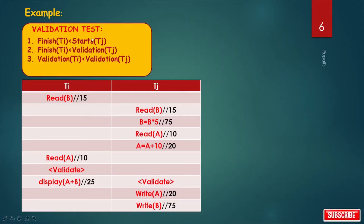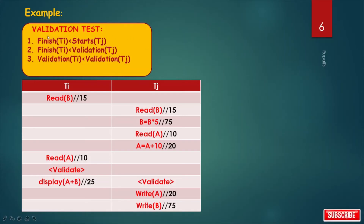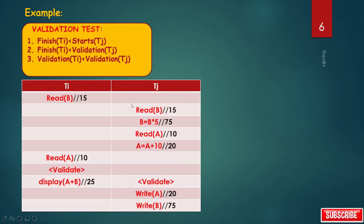Let's take one example. There are two transactions TI and TJ, and we have to check these conditions. Checking the first condition: finish(TI) < start(TJ). But here, TJ started before TI finished its execution, so start(TJ) < finish(TI). This condition is false. The second condition: finish(TI) < validation(TJ) — the finish timestamp of TI is less than the validation timestamp of TJ. Yes, this is true. The third condition: validation(TI) < validation(TJ) — first TI validates itself and then TJ validates itself. This condition is also true.